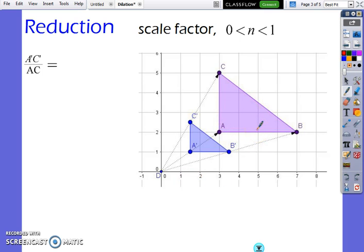Let's find the scale factor by finding the ratio of corresponding side lengths. We'll look at A' C' that is 1 and a half units and AC is 3 units. Write the ratio of the image to the preimage, 1 and a half over 3, simplify that and we get a scale factor of 1 half.